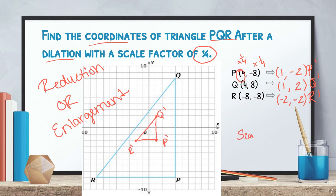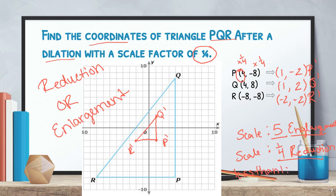The last example had a scale factor of five and was an enlargement; this one has a scale factor of one-fourth and is a reduction. So if you have a scale factor greater than one, it will be an enlargement. If you have a scale factor less than one, it will be a reduction. I hope that makes sense — if not, let me know.